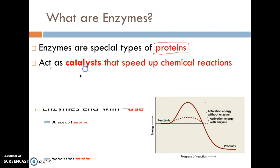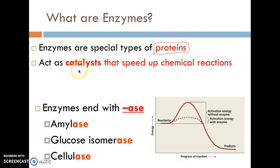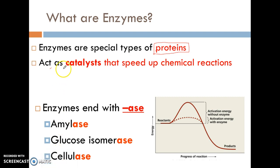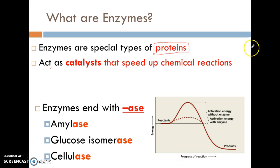What enzymes do is they act as a catalyst. A catalyst is anything that is going to speed up a chemical reaction. For example, if you ate a burger, your stomach is going to need the help of thousands of different enzymes to break down all of the biomolecules that you just put inside of your body. Your body uses these enzymes to speed up the process of breaking them down so that your body can actually use all of that energy.